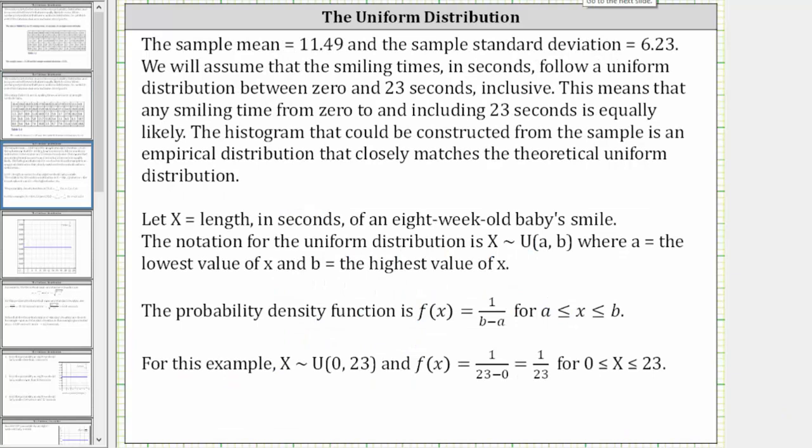We will assume that the smiling times in seconds follow a uniform distribution between zero and 23 seconds inclusive. This means that any smiling time from zero to and including 23 seconds is equally likely. The histogram that could be constructed from the sample is an empirical distribution that closely matches the theoretical uniform distribution.